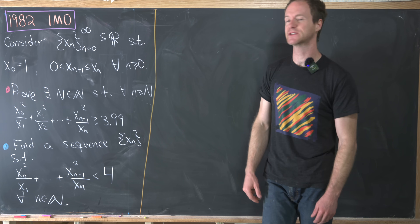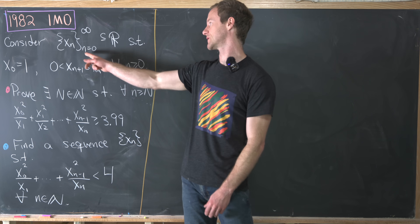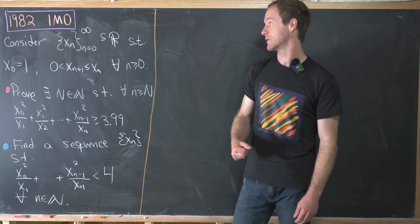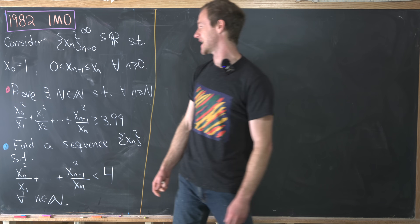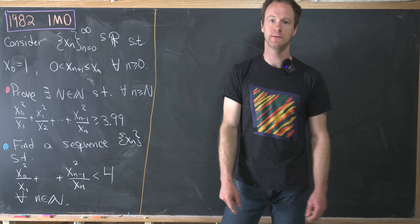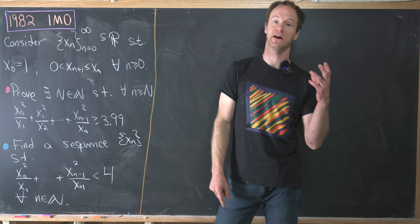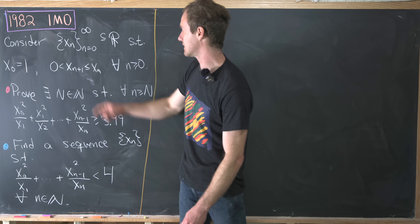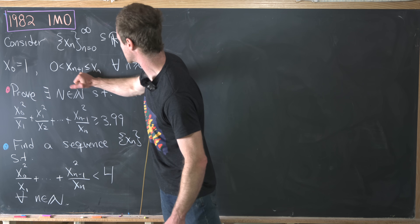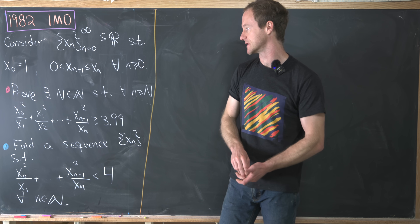We've got a sequence of real numbers, which I'll call x₀, x₁, x₂, and so on — the sequence xₙ as n runs between 0 and infinity. It satisfies two conditions: x₀ is 1, and xₙ₊₁ is bigger than 0 and less than xₙ, for all n ≥ 0. So in other words, the sequence is decreasing, or really non-increasing.